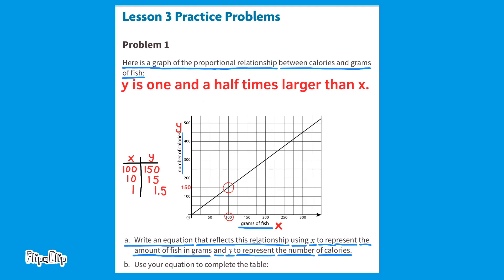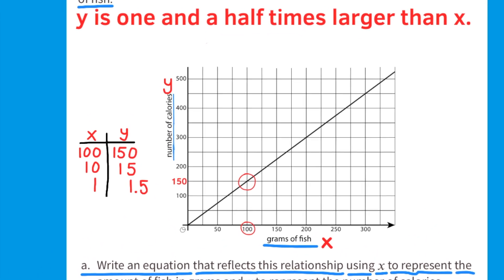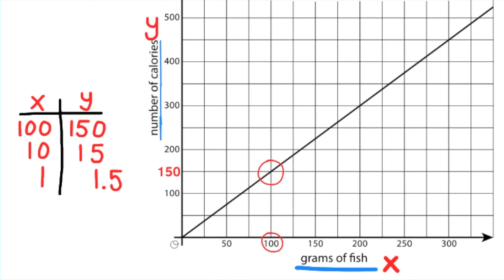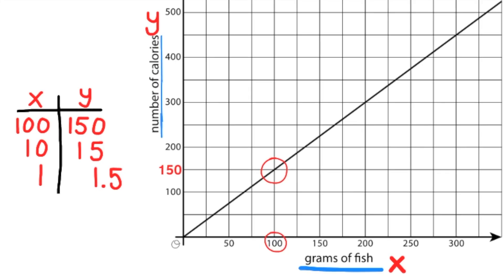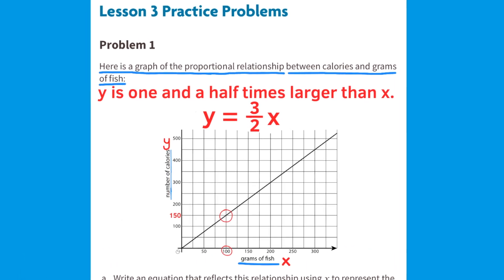The rate of change is that y is 1.5 times larger than x. When x is 100, y is 150 — 150 is 1.5 times larger than 100. When x is 1, y is 1.5. That's another example showing y is 1.5 times larger than x. So an equation that represents this relationship is y equals 1.5 times x, or y equals 3/2 times x.